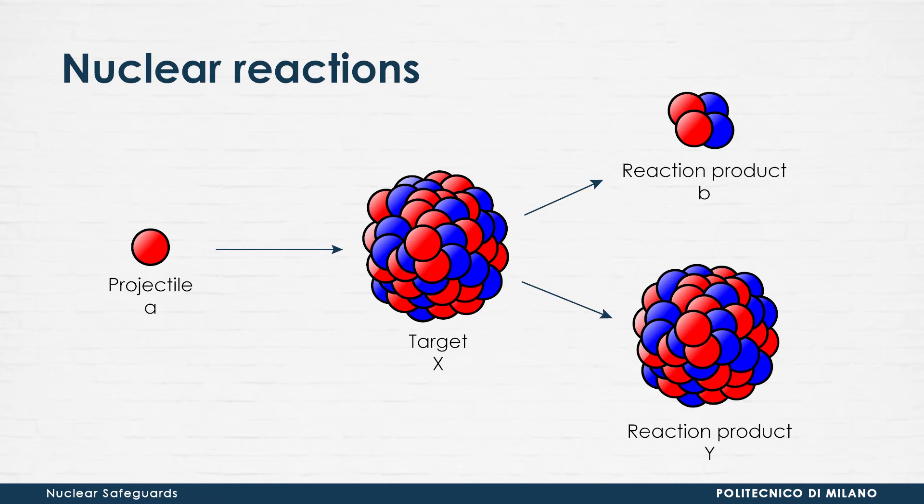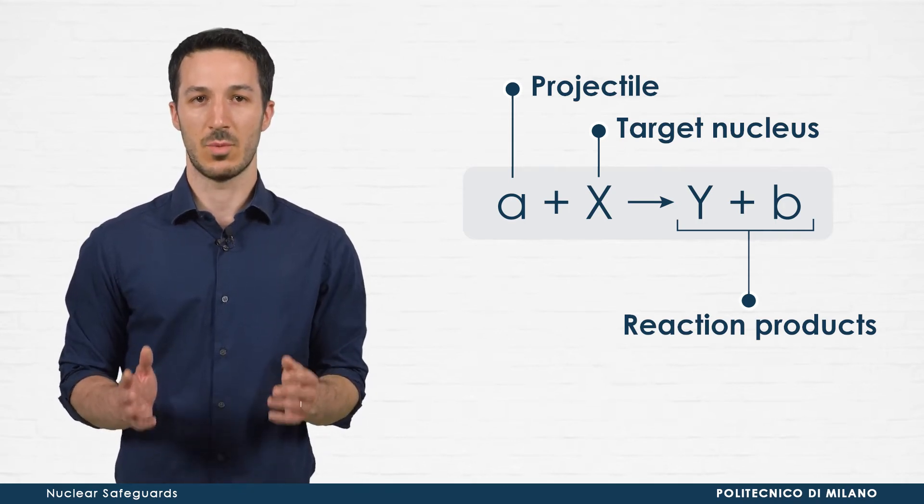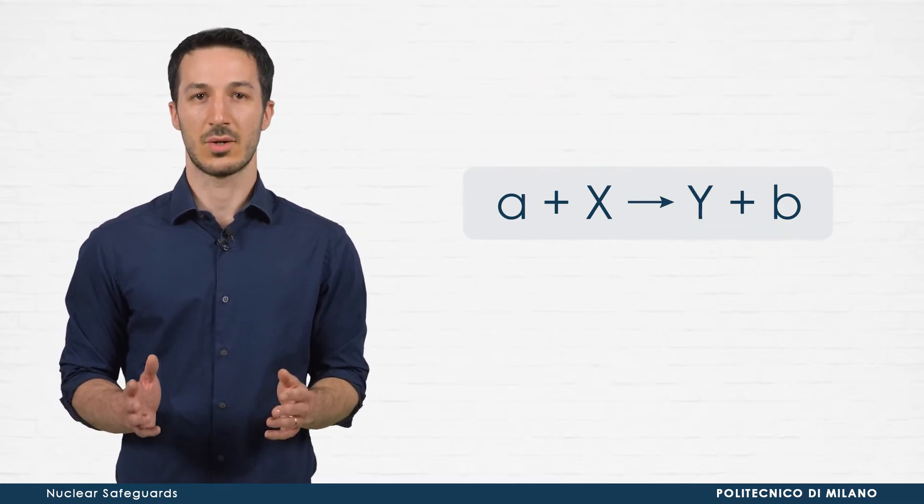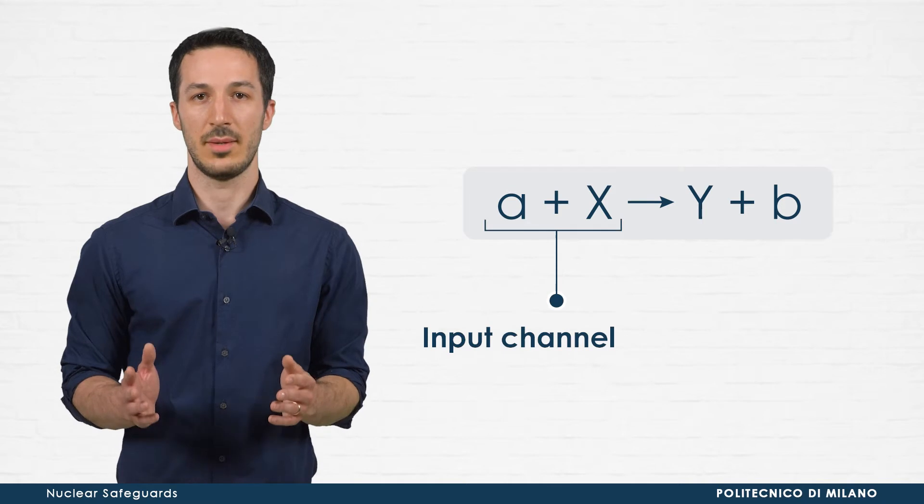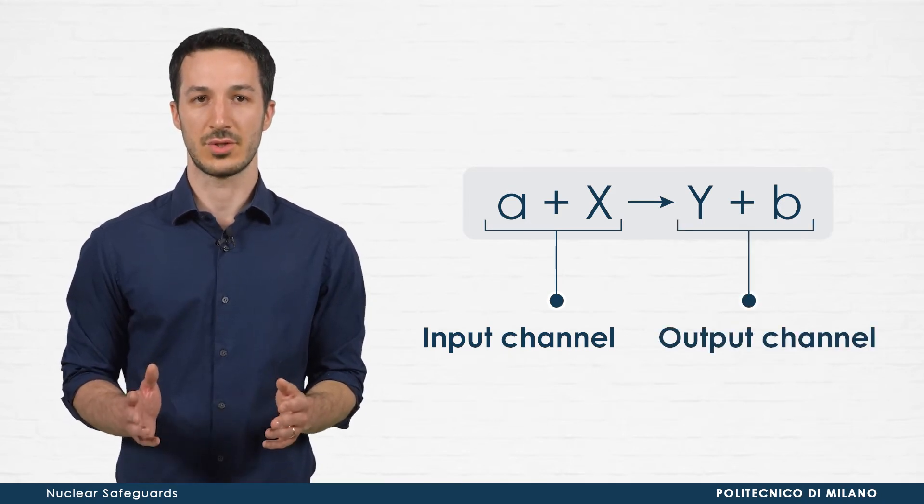The incident particle could be, for example, a nucleon, a light nucleus or a photon. In general, a two-body nuclear reaction is represented in the following way. A is the projectile and X the target nucleus, while Y and B are the reaction products. A and X are called input channel, while B and Y are called output channel of the reaction.